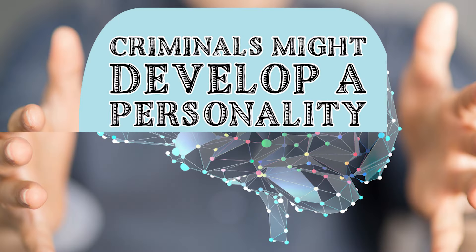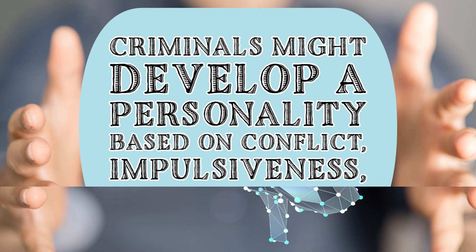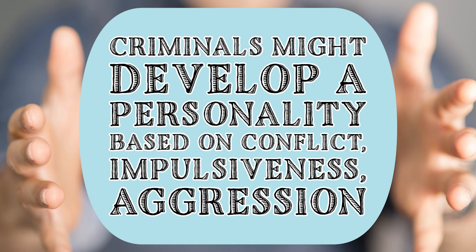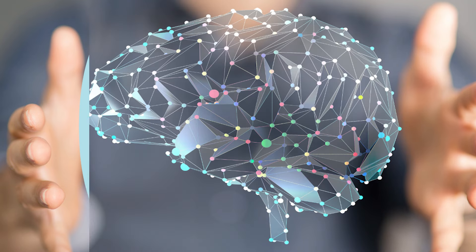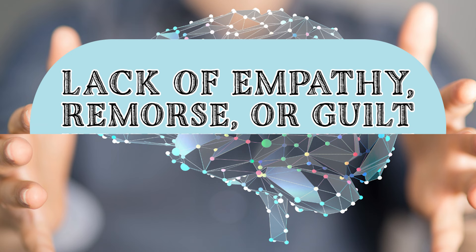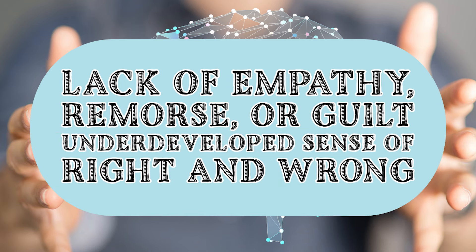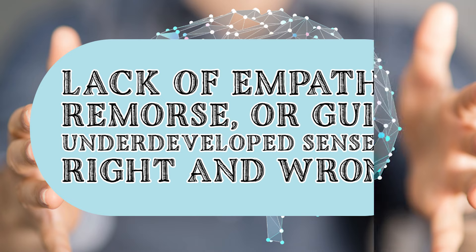Unlike others who develop a socially conforming personality, criminals might develop one based on conflict, impulsiveness, and aggression. Key to this theory is the lack of empathy, remorse, or guilt, and an underdeveloped sense of right and wrong in the criminal mind.